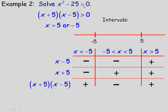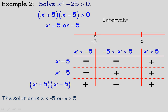We're looking for where x squared minus 25, which is the product x plus 5 times x minus 5, is greater than 0. The product is positive on the first interval and the third interval — x less than negative 5 and x greater than 5. So our solution is x is less than negative 5 or x is greater than 5. On the number line, we put open circles at negative 5 and 5 with arrows extending outward in both directions.